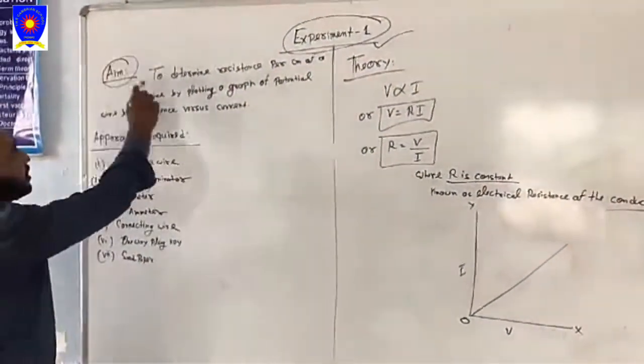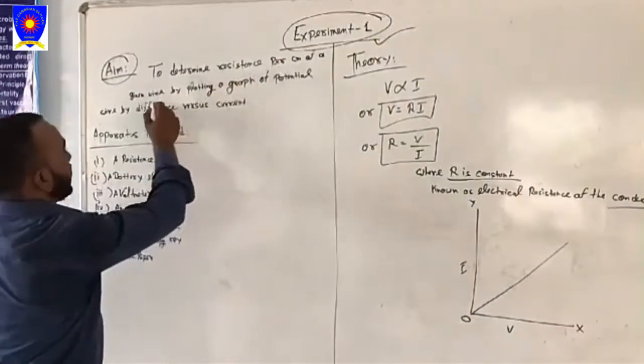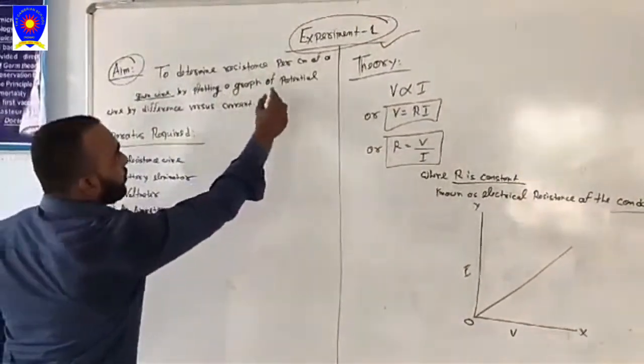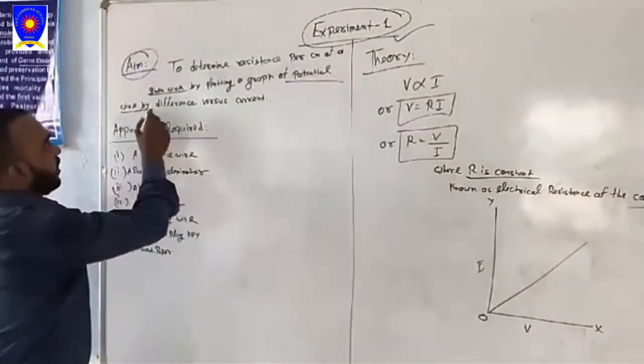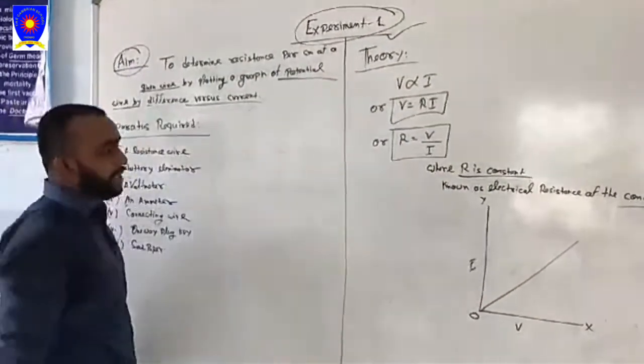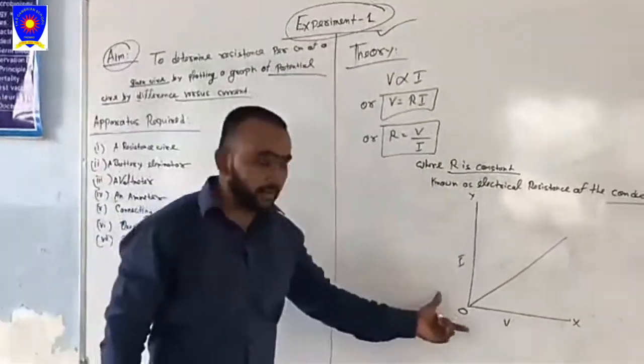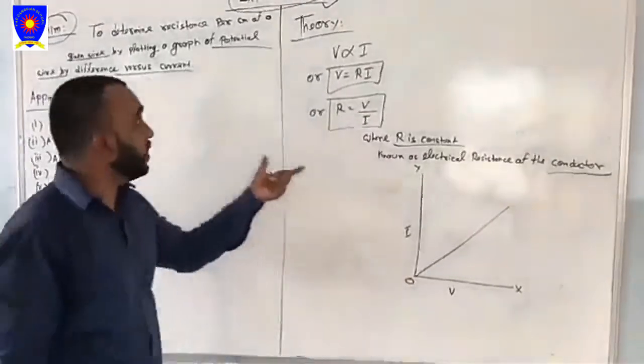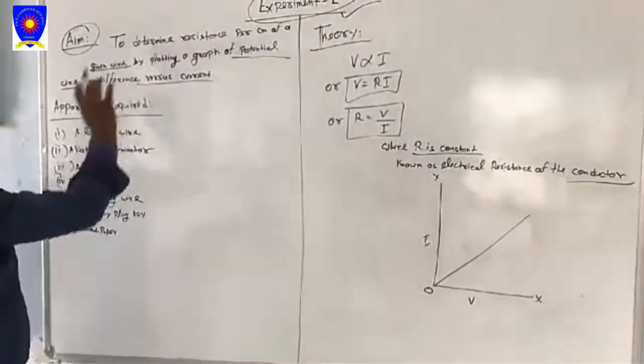The aim of this practical is to determine the resistance per centimeter of a given wire by plotting a graph of potential difference versus current. We have to make a graph between voltage and current from this experiment.